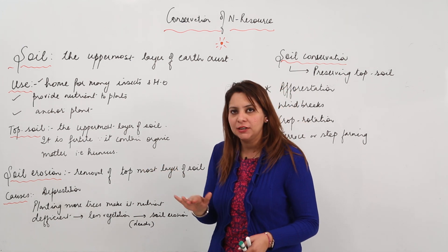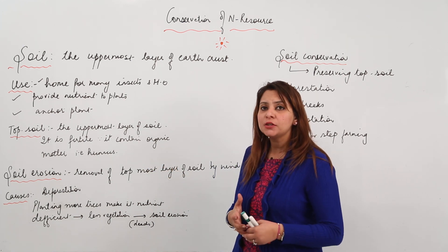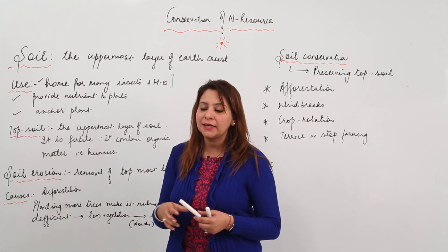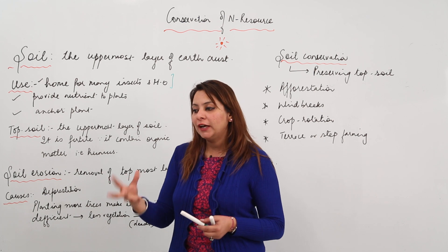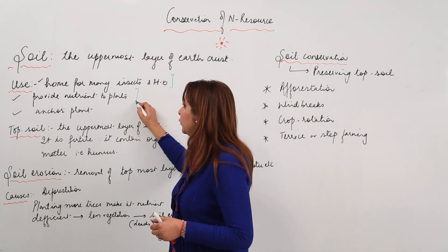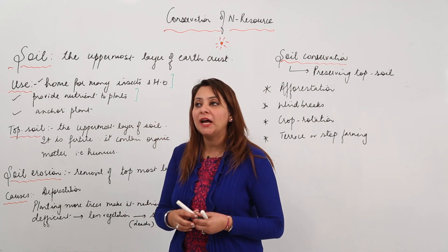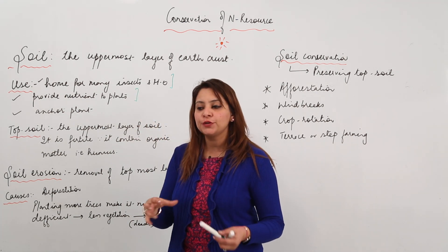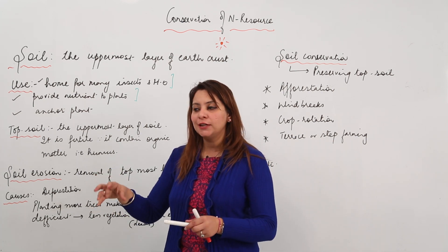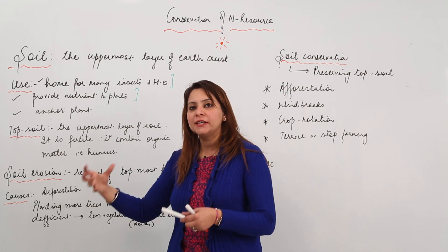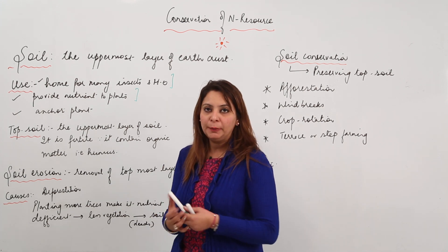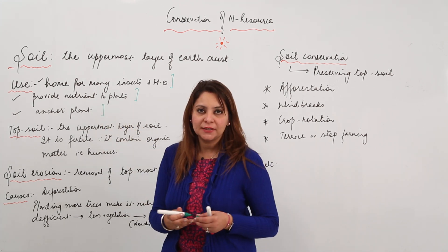Soil is used as a home for many microorganisms and insects. It provides nutrients to plants because plants need certain nutrients which are already in soil. If plants get those nutrients, they can photosynthesize and grow, and then we get food. So directly or indirectly we are dependent on soil. It also anchors and holds the plant.